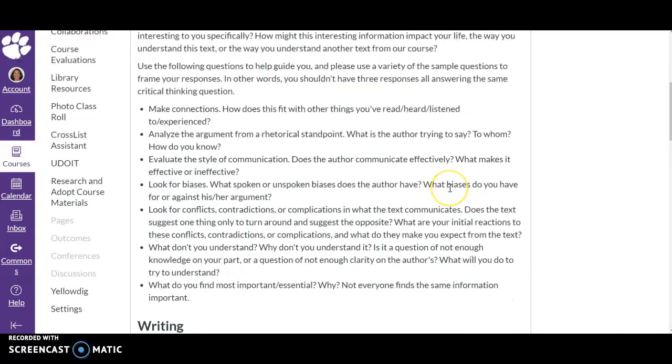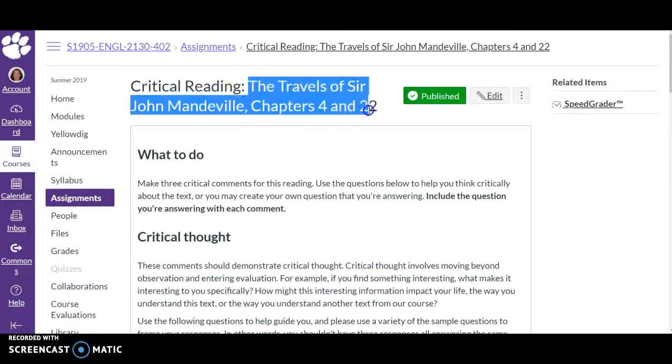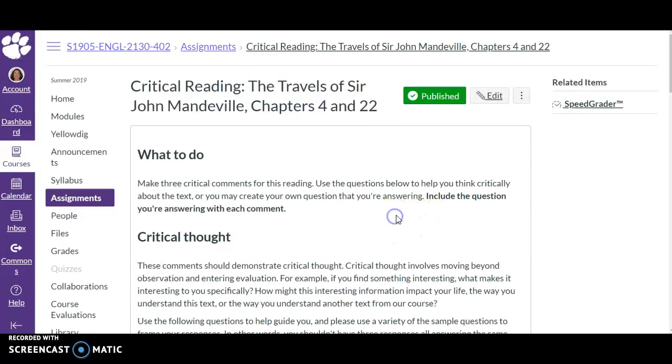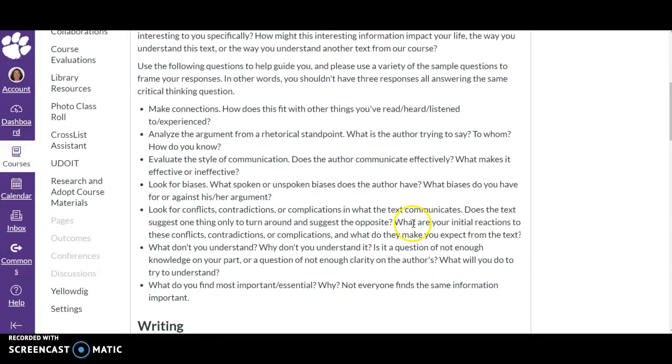So that's the content of a critical reading assignment. You'll have your name, the text that you're analyzing—so here make sure that you explain that you are writing about the Travels of Sir John Mandeville, Chapters 4 and 22—and then you'll have your three questions with your three responses to those questions.